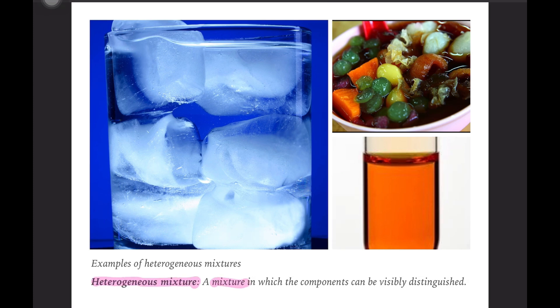So another type of mixture is heterogeneous mixture, in which the components can be visibly distinguished. That means there is a visible separation between the components.